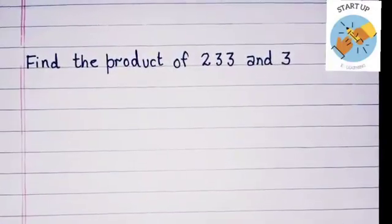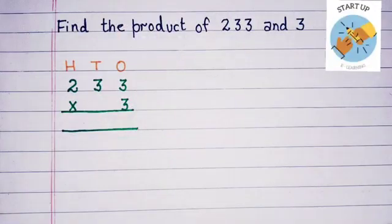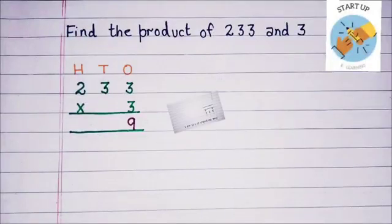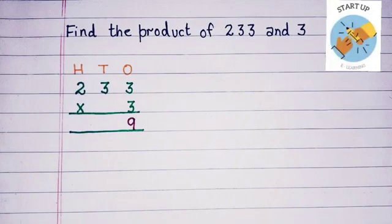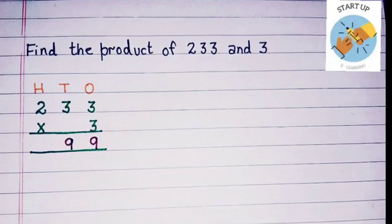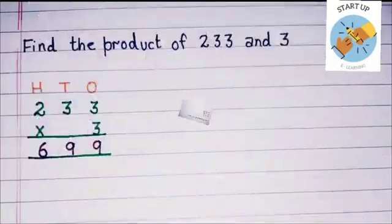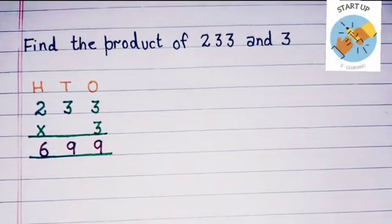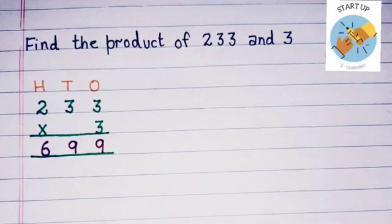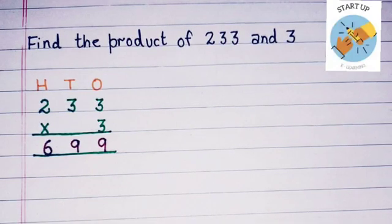Let's see one more example for better understanding. Find the product of 233 and 3. Let's arrange them in the proper columns: 1's digit under 1's place, 10's digit under 10's place, and 100's digit under 100's place. Now let's start the multiplication: 3 multiplied by 3 is equal to 9, written under the 1's column. Then 3 multiplied by 3 again is equal to 9, written under the 10's place. Now multiply 3 by 2: 3 multiplied by 2 is equal to 6, written under the 100's place. The product of 233 and 3 is 699.